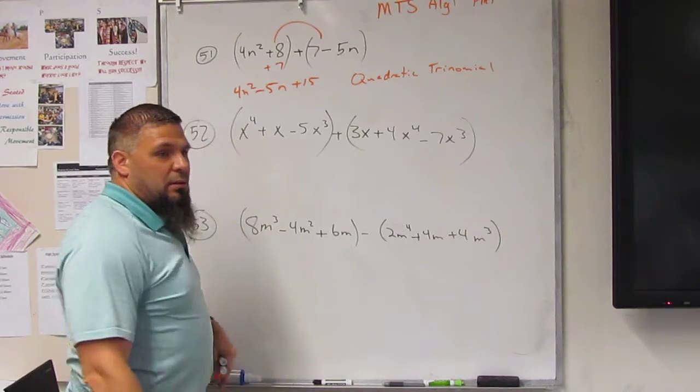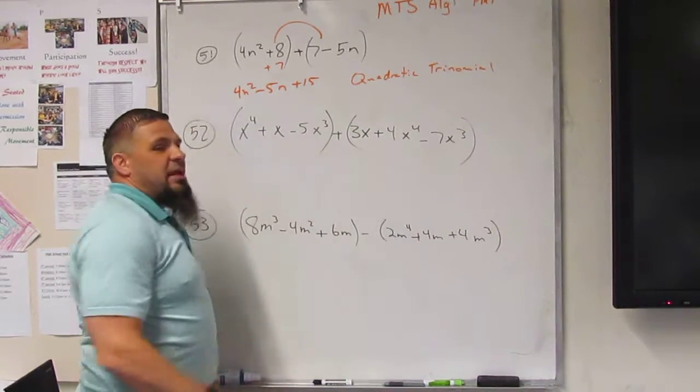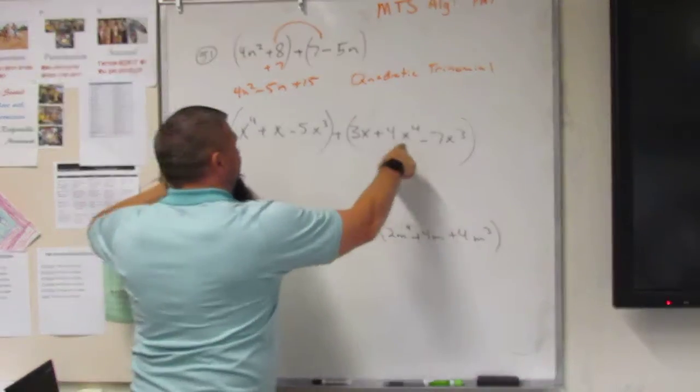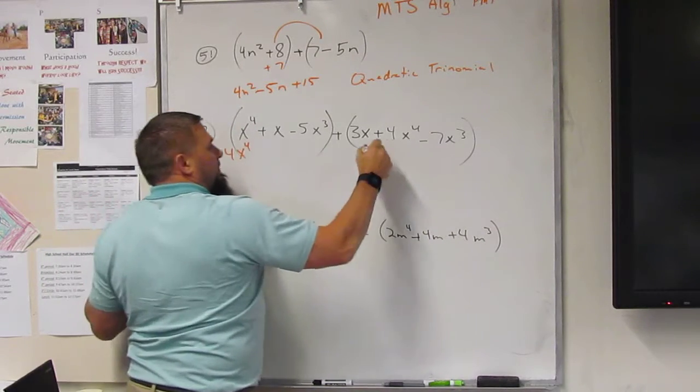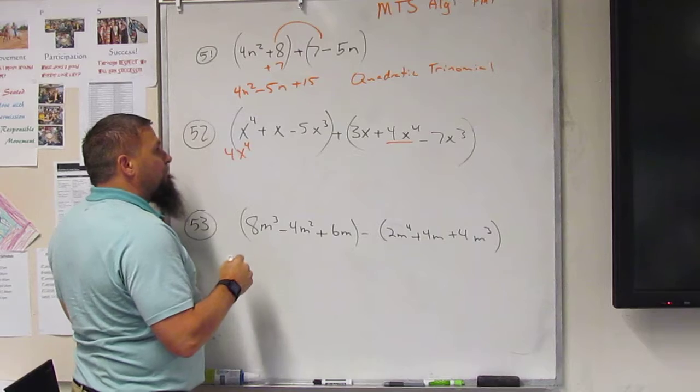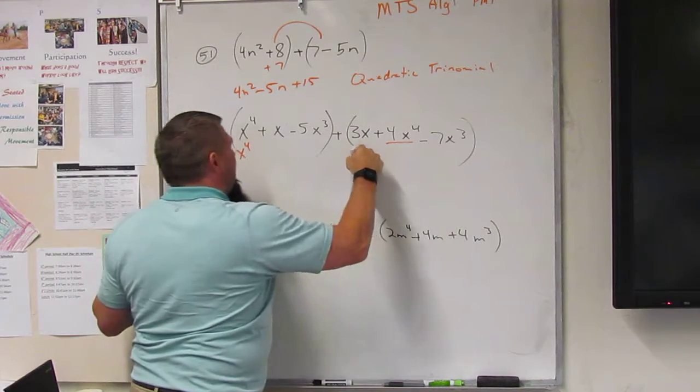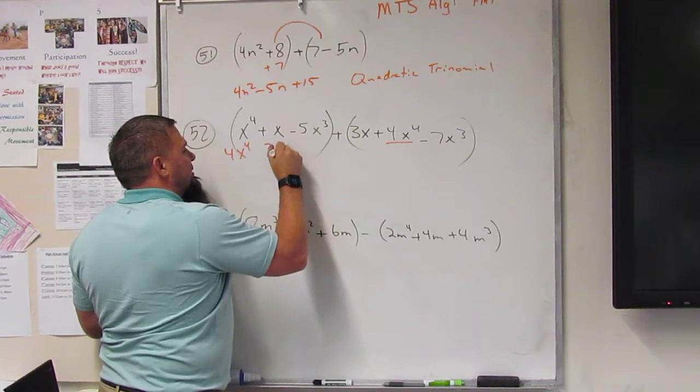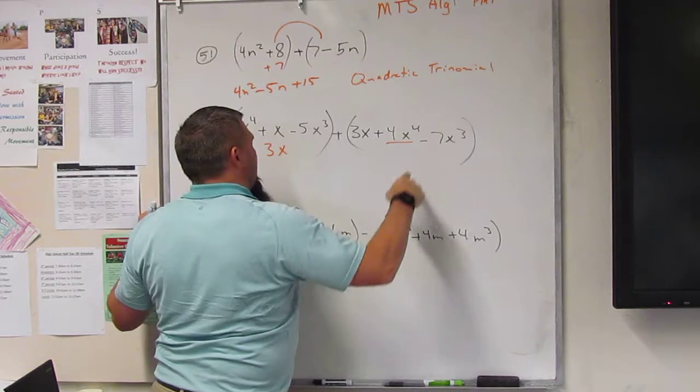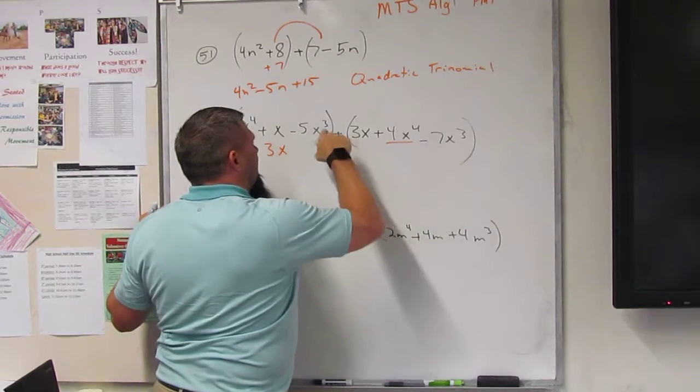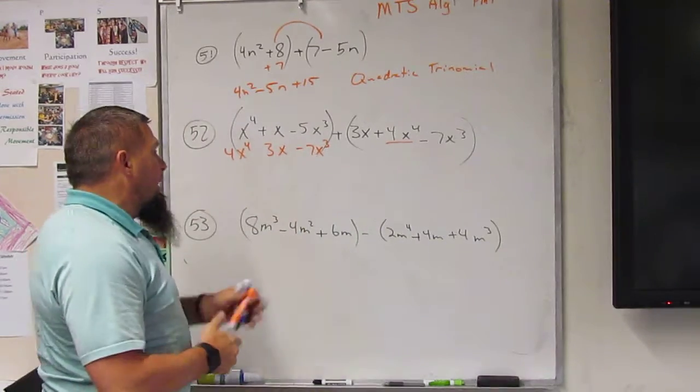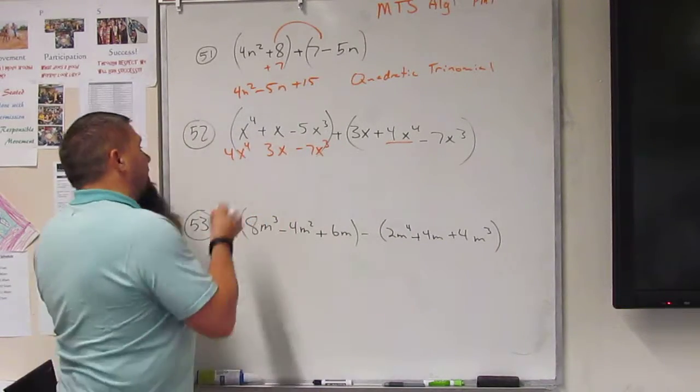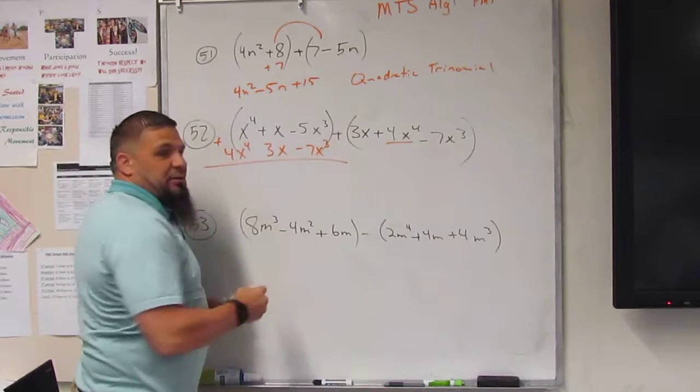Okay, alright, same thing here. I'm going to take my 4 and my 4. So that's 4x to the 4th. I've got that down. I have 1x and I have 1x. I'm going to put 3x. And then I've got an x cubed, and an x cubed. Minus 7x cubed. Okay? Because I'm just adding these up, I'm just adding those.